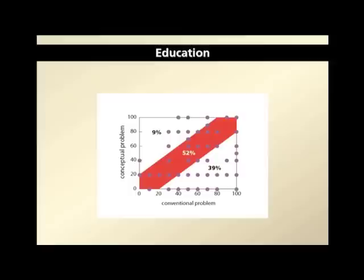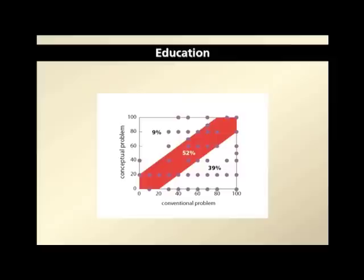There's a large fraction of students who do well on the traditional problem but do not understand the concept. That's 40% at Harvard. I challenge you to try something like this at your institution and you'll probably find something very similar. How would you classify those students? In the US we have a term for it: 'plug and chug' — they see a problem, classify it, and just follow a procedure.